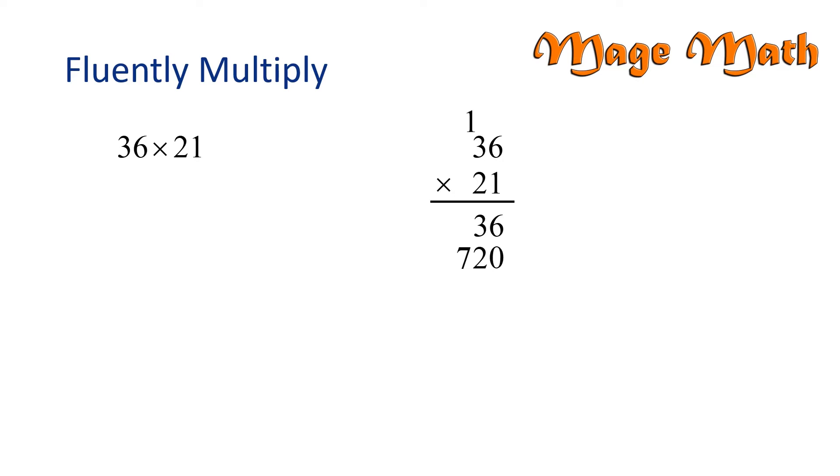Our next step is to add thirty-six and seven hundred twenty. We're going to add in the ones column, six plus zero is six. Now the tens column, three plus two is five.